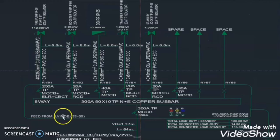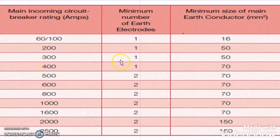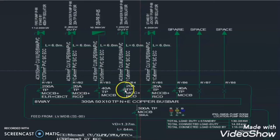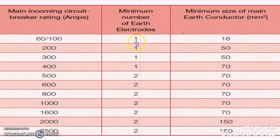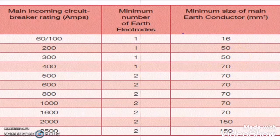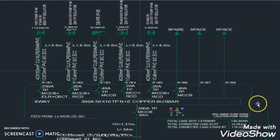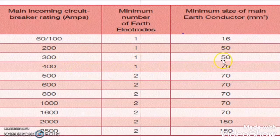Now let us take another example. For this LV panel, the main incomer breaker rating is 300 ampere. So as per this chart, that LV panel requires one earth pit with a minimum size of the main earth conductor of 50 square mm. Here you can see that there is only one pit and the size of the main earth conductor shown is 70 square mm. But as per the chart, the minimum is 50 square mm — you can go for the next higher rating cable also.